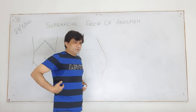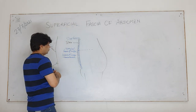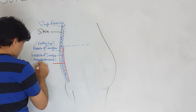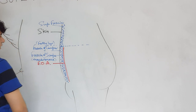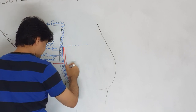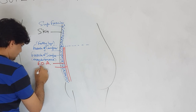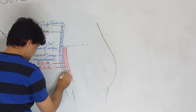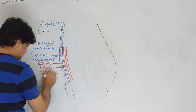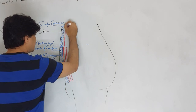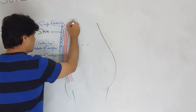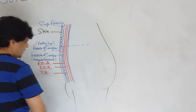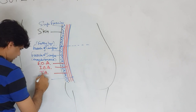Below this superficial fascia, in the anterior abdominal wall there are three muscles. The most superficial is external oblique abdominis, then the next layer is internal oblique abdominis, and the third muscle layer is transversus abdominis. These muscles extend throughout the lateral abdominal wall. Below these muscles is the deep fascia of the abdomen, called fascia transversalis.